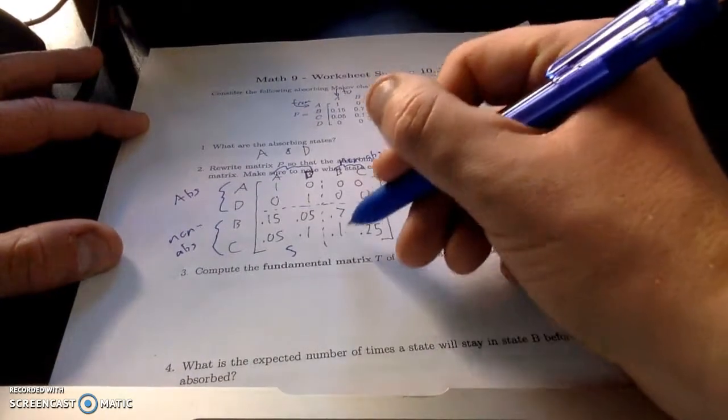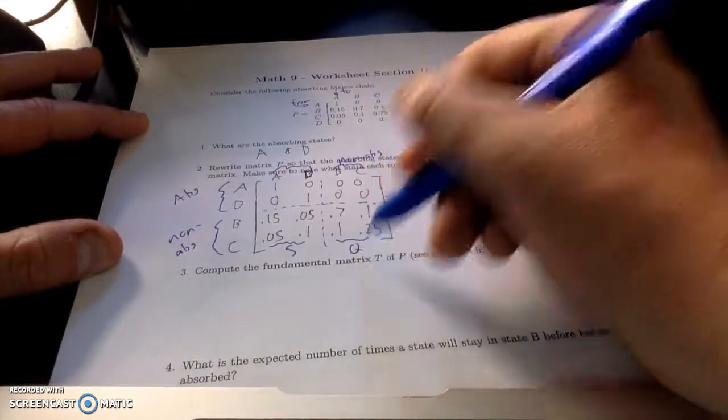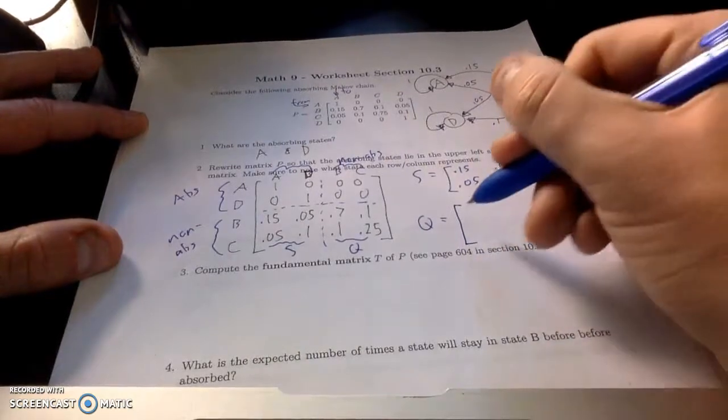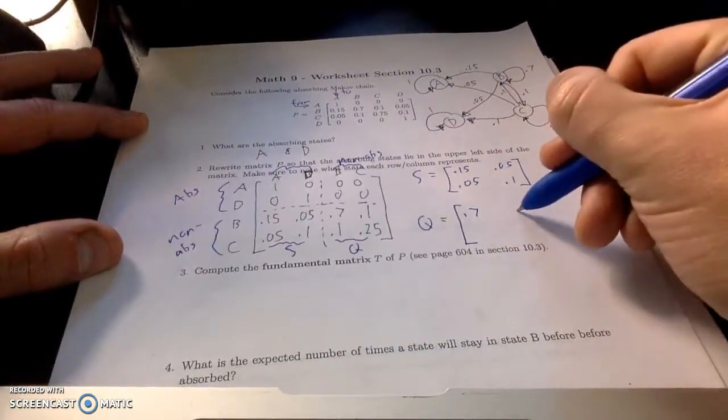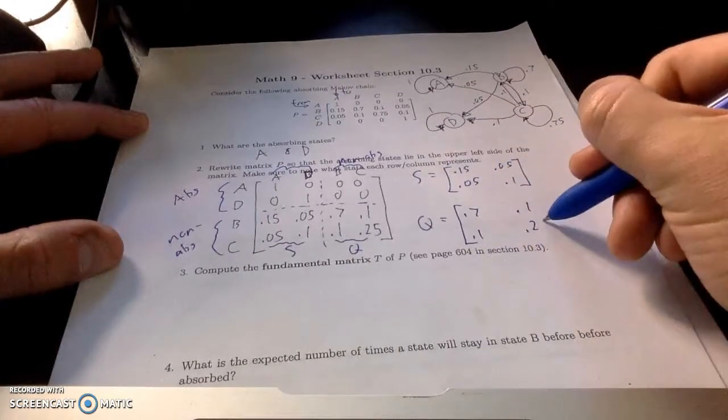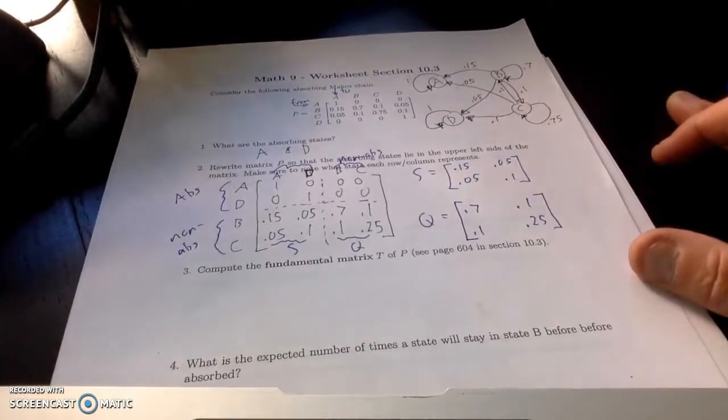And this other matrix on the bottom, that's called Q. We're going to call that Q matrix. So that is 0.7, 0.1, 0.1, 0.25. All right. So that's Q.